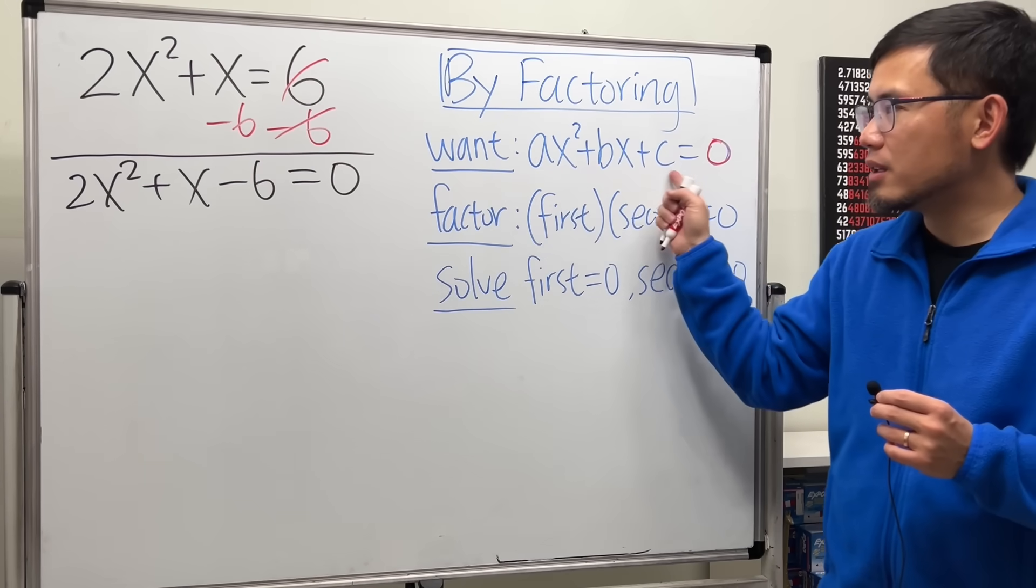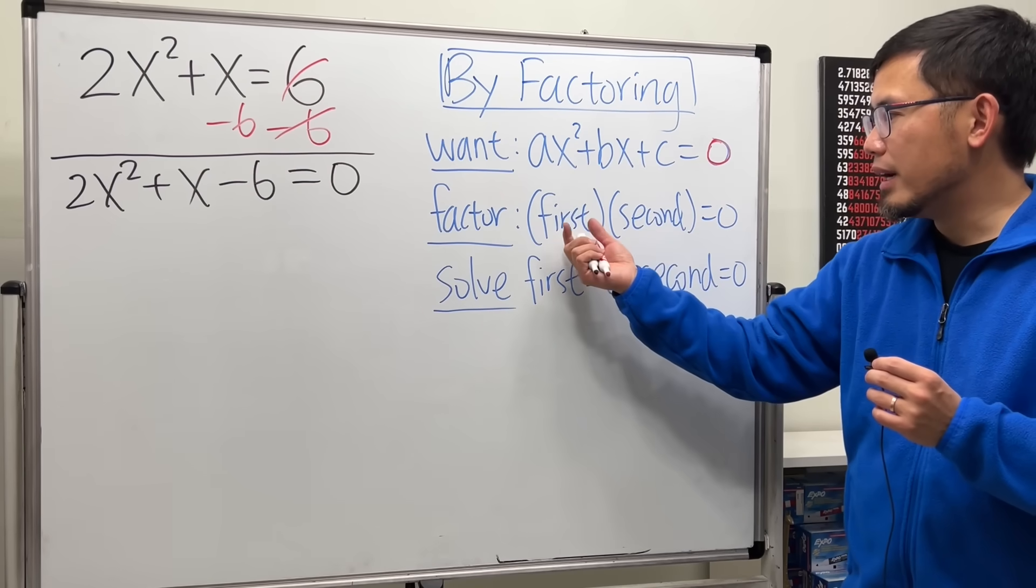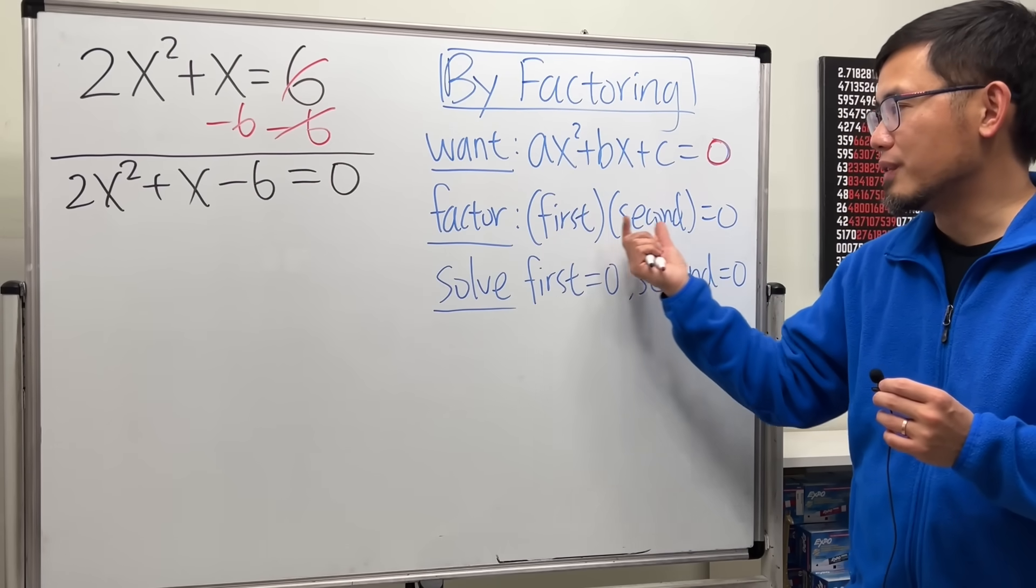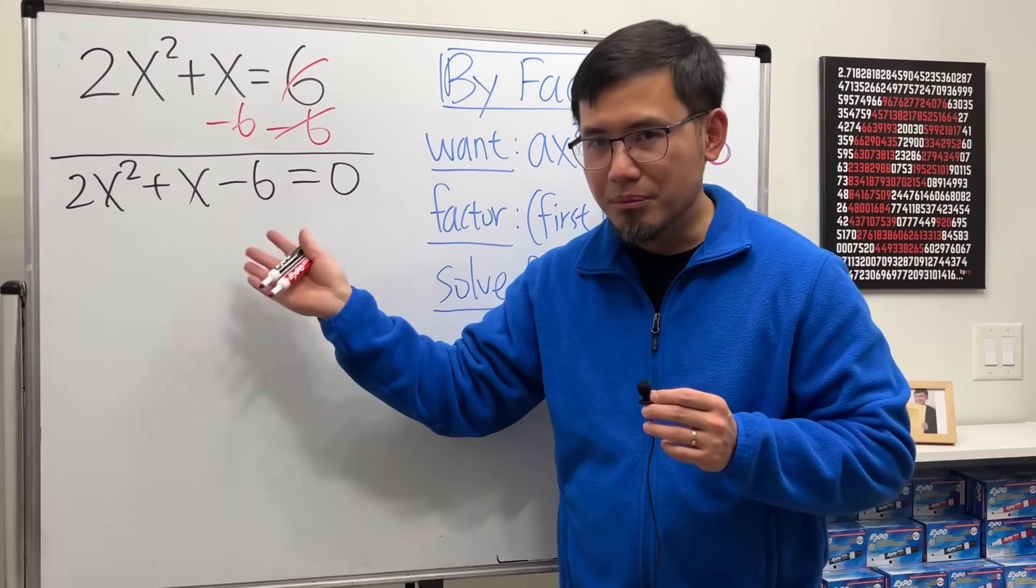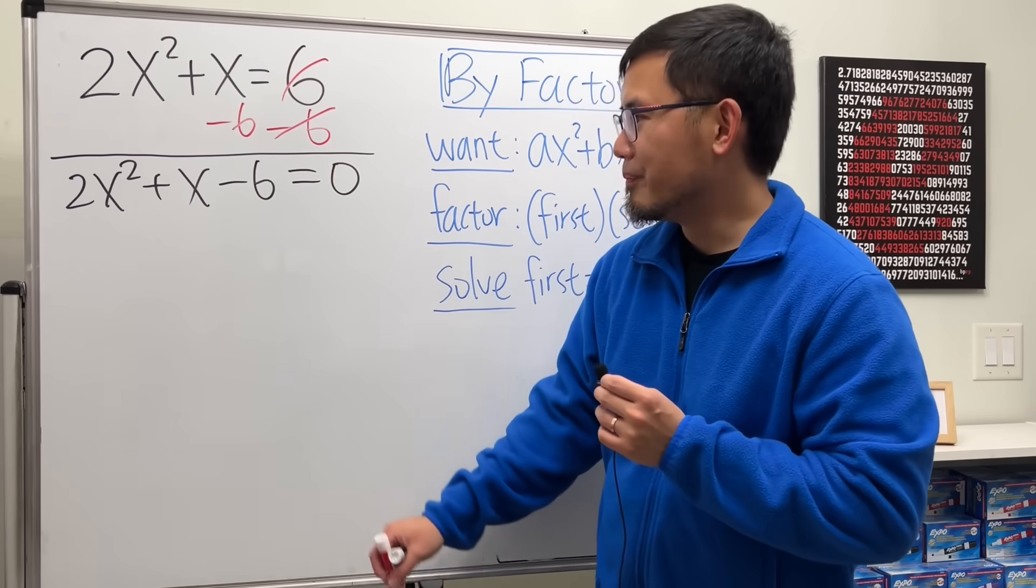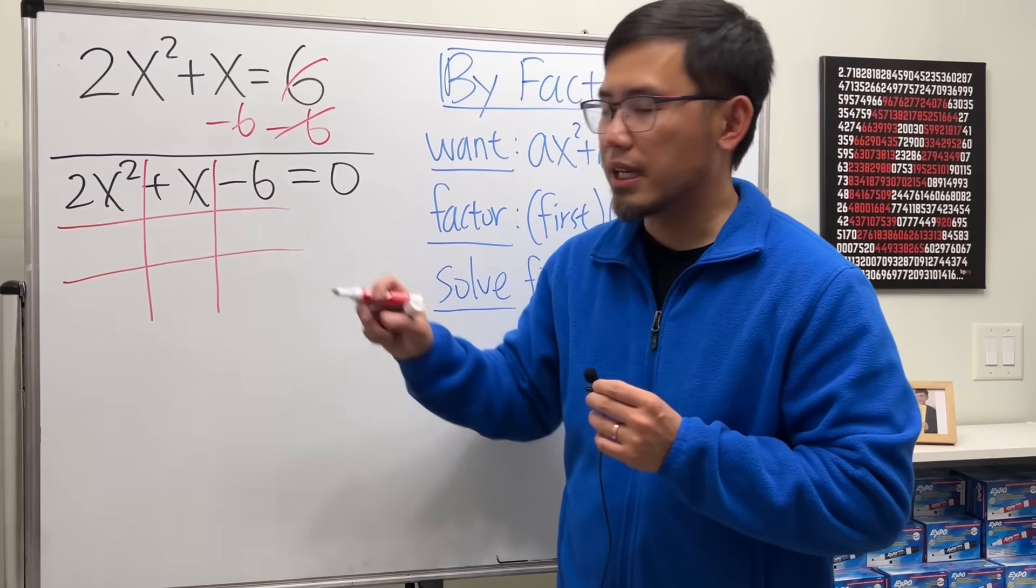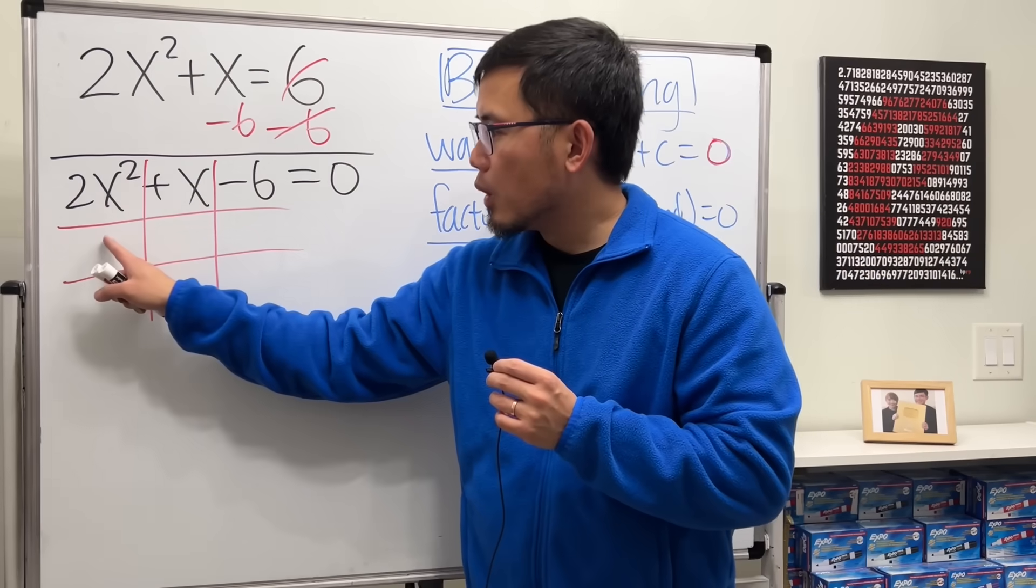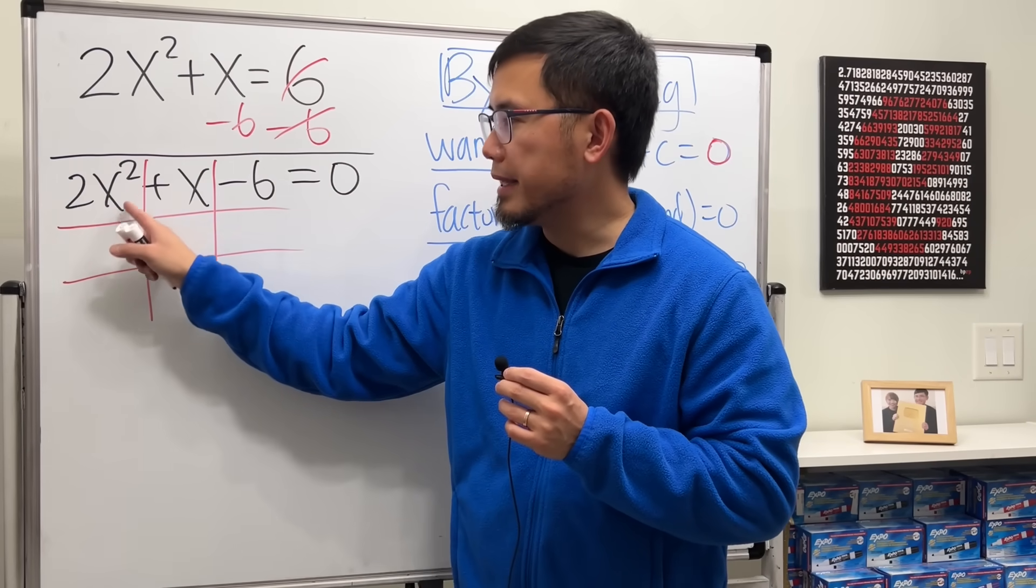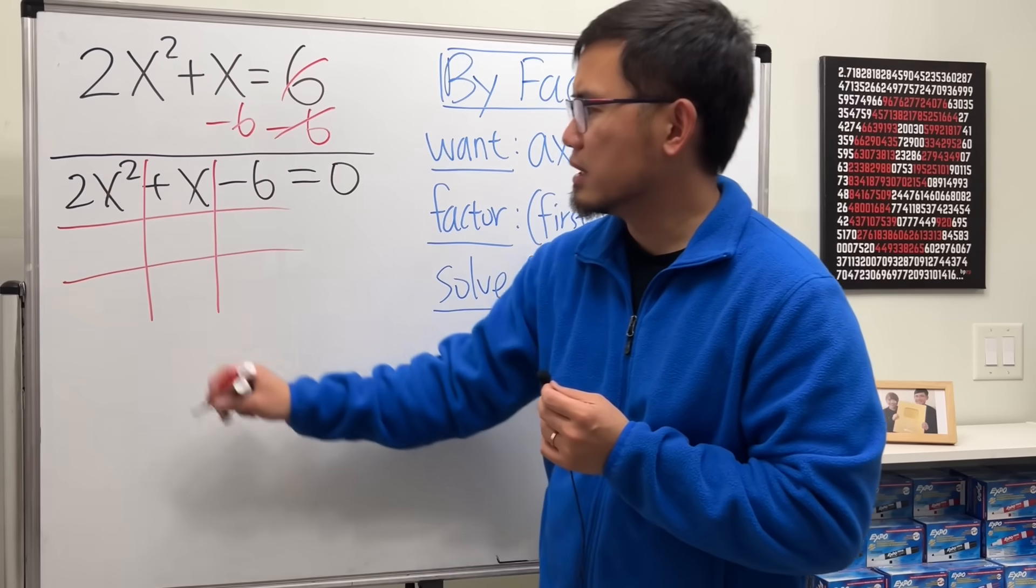Now we are going to factor this quadratic expression. If it's factorable, then most likely you end up with two factors, first and also the second. So let me show you how we can factor this. I will show you the tic-tac-toe method. Just go ahead and draw the tic-tac-toe boxes like this. To make this work, you ask yourself, what times what will give you 2x squared? x times 2x, right? I think that's the only choice.